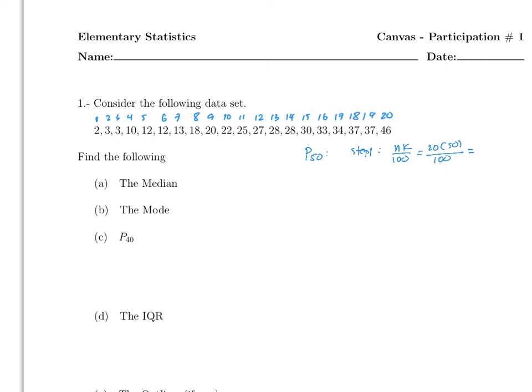A student asks: 'How did you get 50?' Because the median is P50. The median is always P50, always — which is also the same thing as Q2.